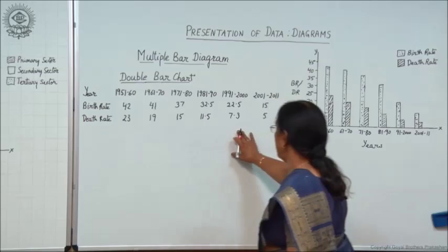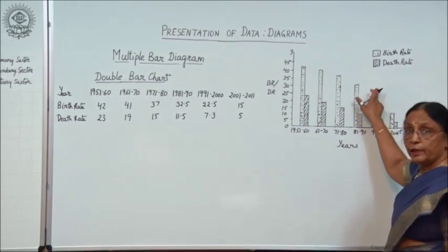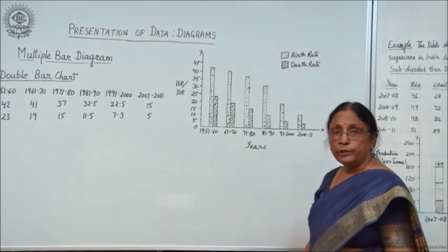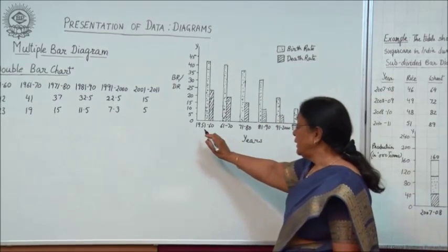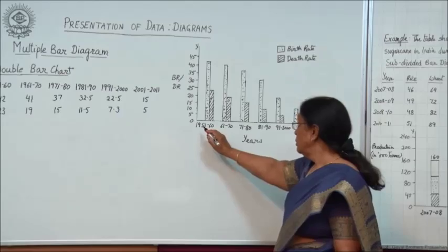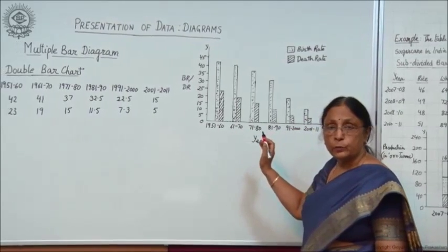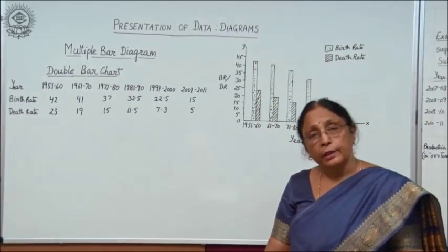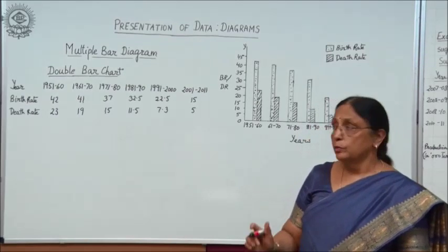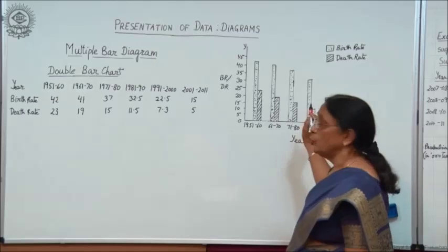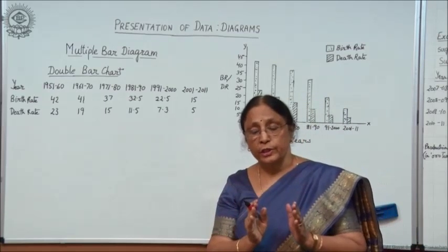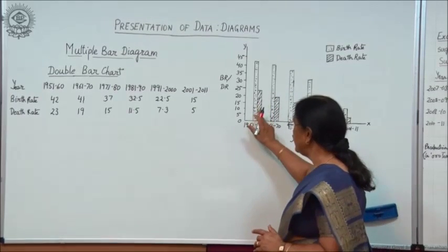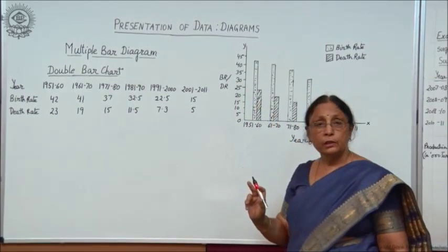Now let us take the example with the help of a diagram. Here you see the diagram — it is based on the data of birth rate and death rate. On the X axis, the horizontal axis, we take the years, and on the Y axis we show birth rate and death rate. Here two bars are drawn, meaning each year shows two sets of bars — one bar shows birth rate and another shows death rate.